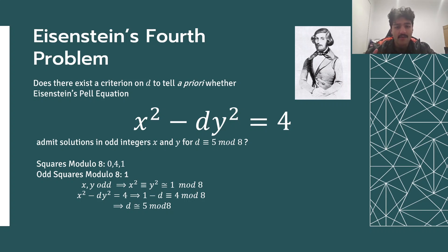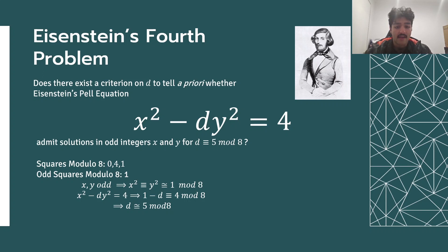We first see that the congruence condition is necessary, as if x squared minus dy squared is equal to 4, since the only squares mod 8 are 0, 4, and 1, and the only odd squares mod 8 are 1, then x and y odd implies that x squared must be congruent to y squared congruent to 1 mod 8. So reducing the Eisenstein-Pell equation, we see that 1 minus d is congruent to 4 mod 8, and thus d is congruent to 5 mod 8.